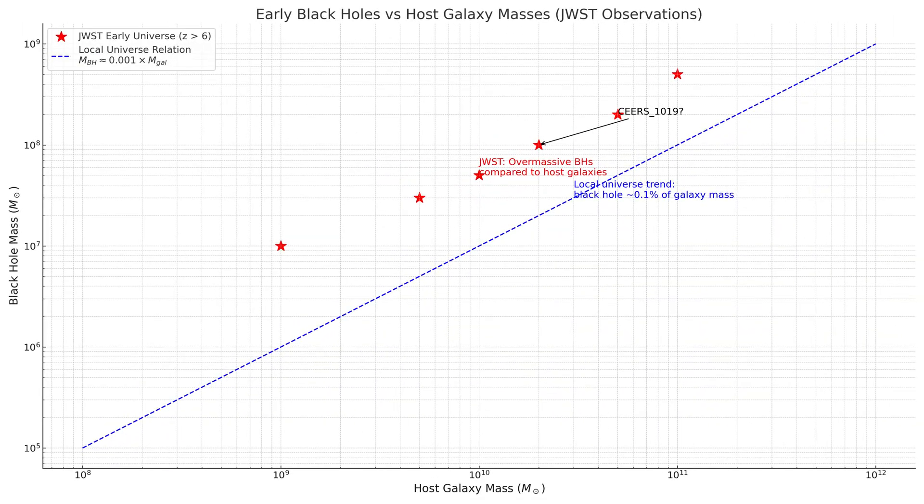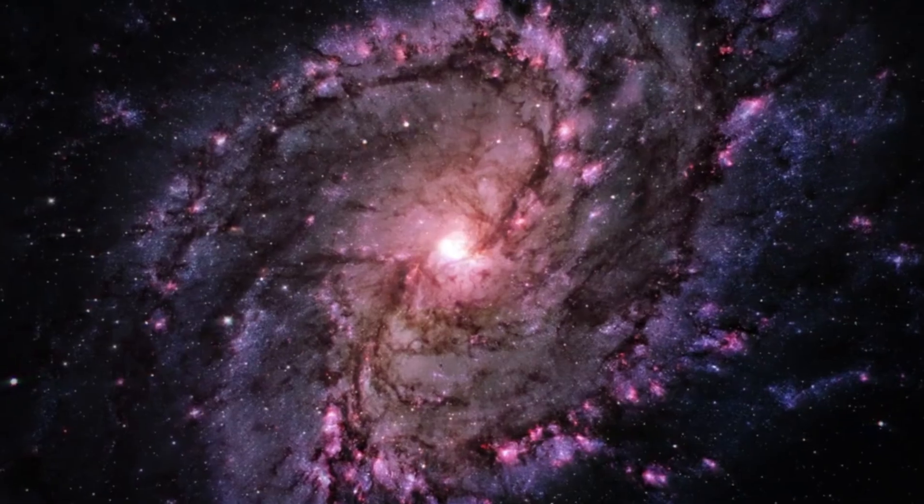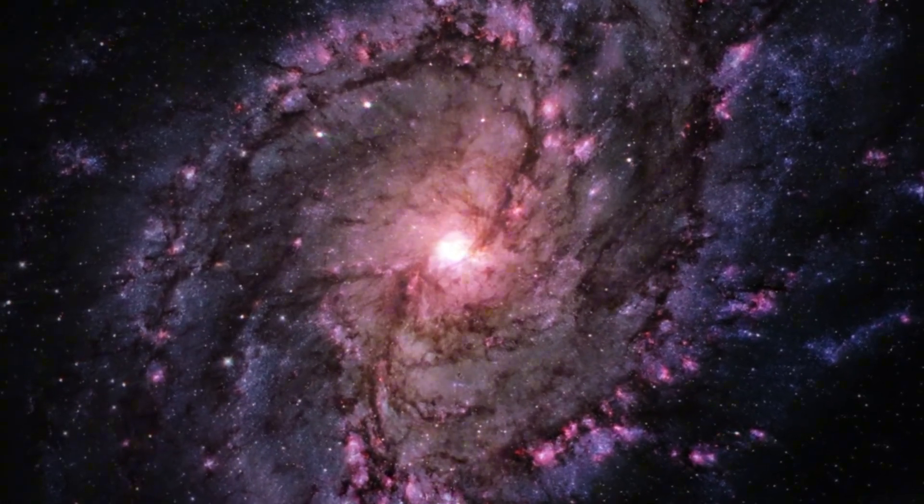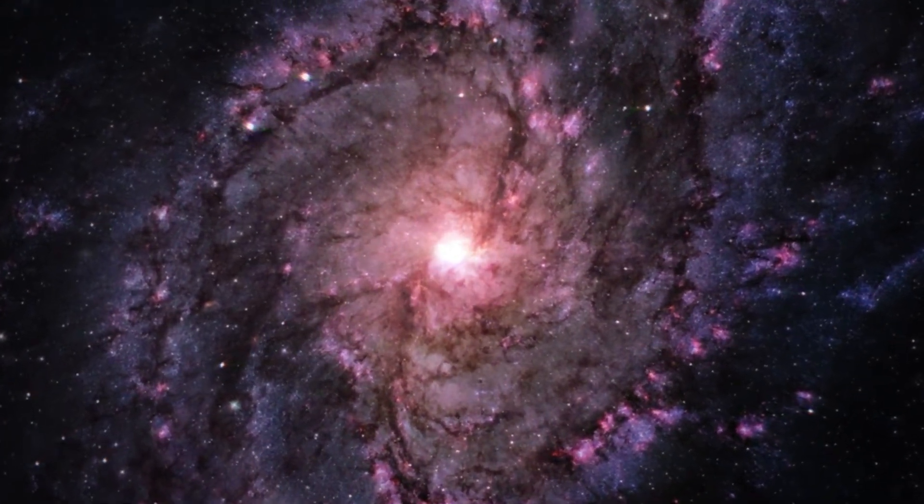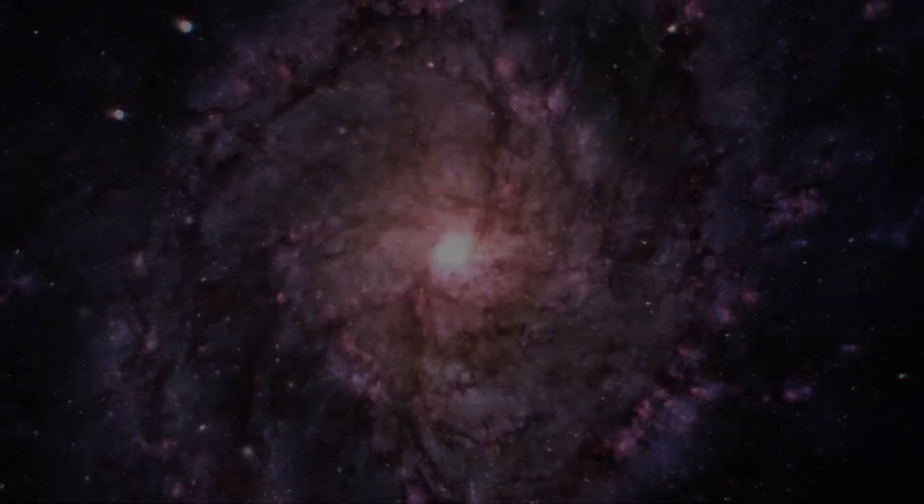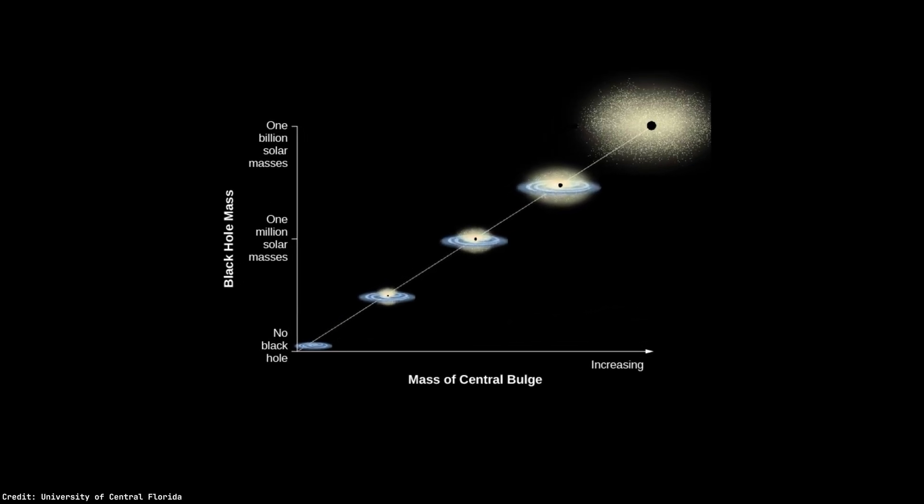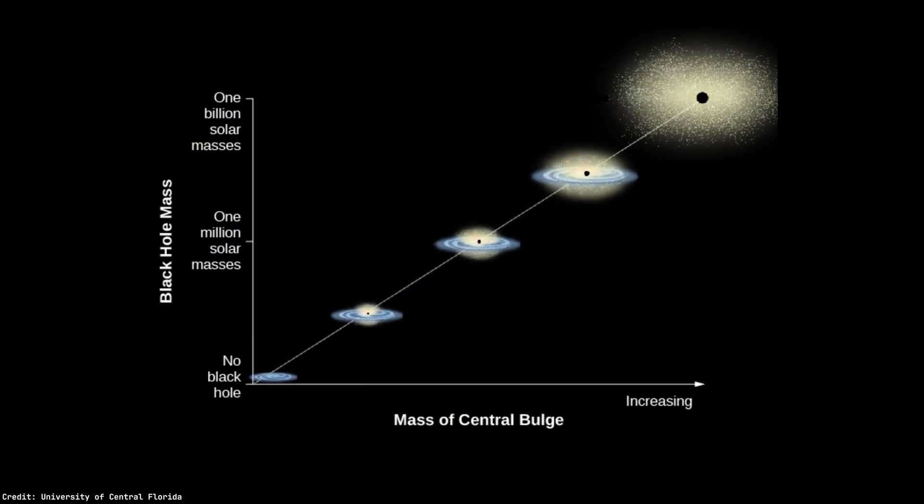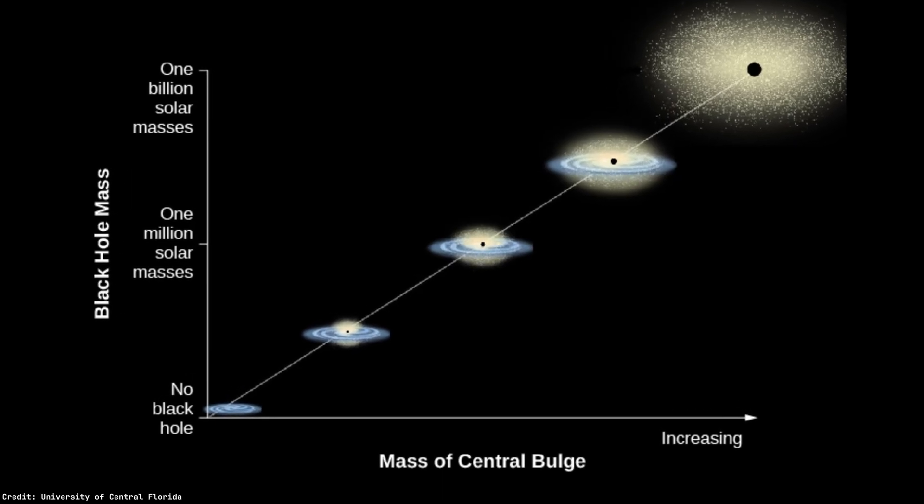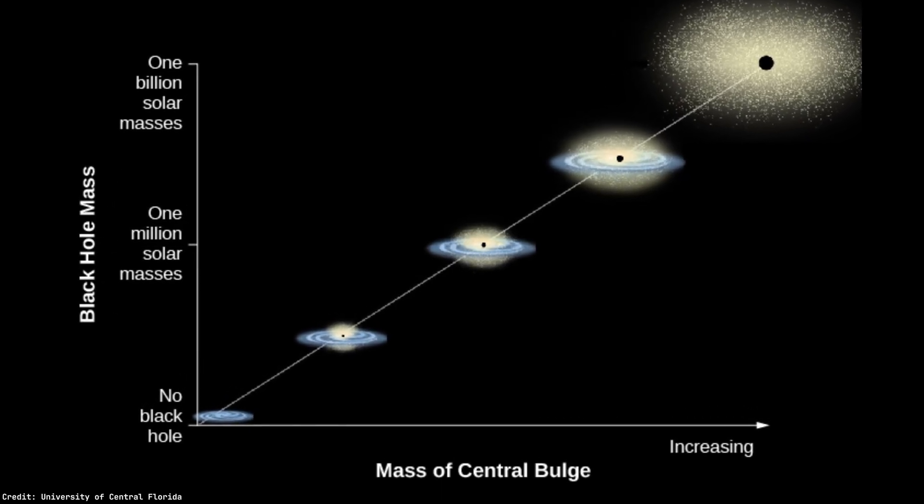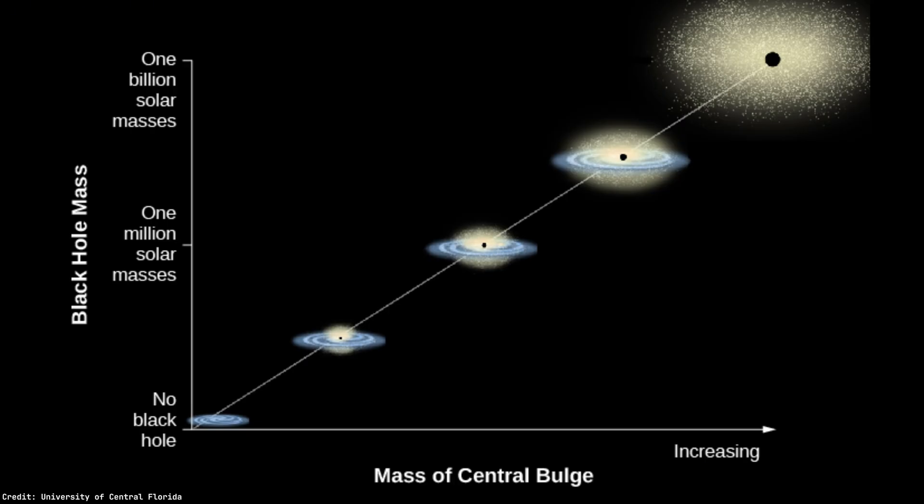In fact, observations indicate that these black holes are not only consuming matter, but also contributing to the birth of stars and shaping the surrounding galactic structure. This suggests a highly interactive and codependent relationship between black hole growth and galaxy development. These insights strongly support the framework of co-evolution, a concept central to the M-Sigma relation, which links the mass of a supermassive black hole to the velocity dispersion of stars in a galaxy's bulge.